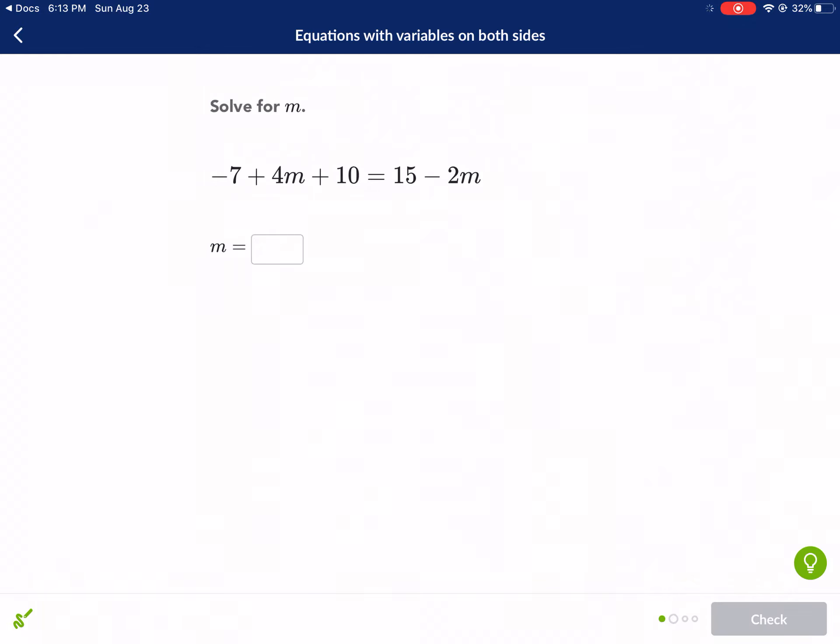Now we have a lot of things going on in this one. Of course we have variables on both sides as the name suggests here, variables on both sides. So we know we need to move the variables at some point.